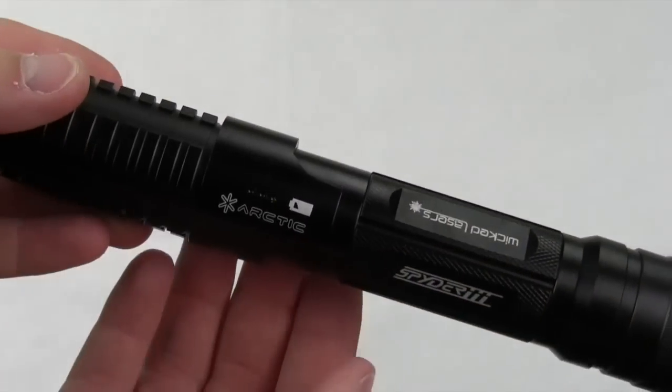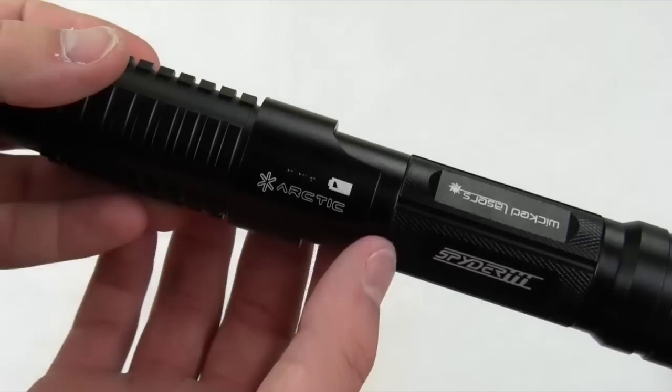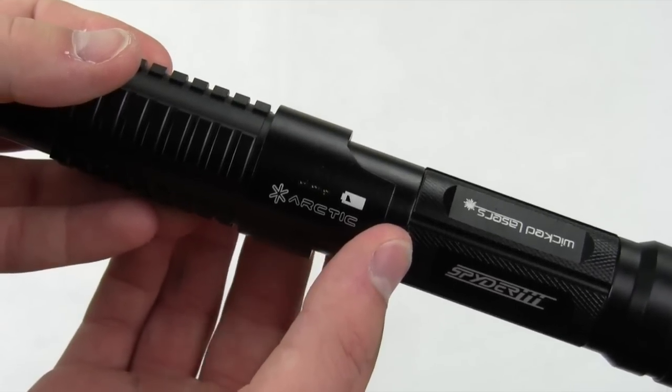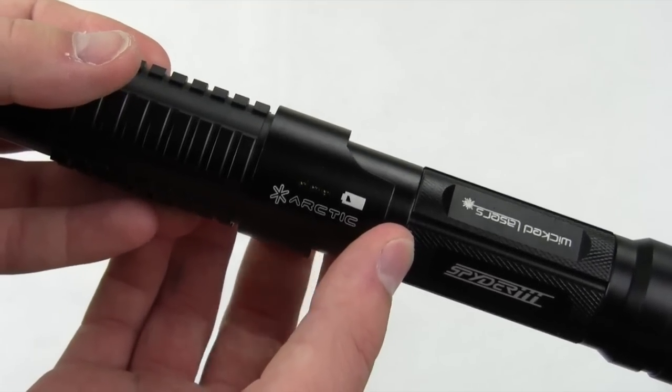As you can see, there is the power indicator right there. There's also an LED on the other side. It kind of helps you figure out the key combination. You press three times, one two three, then you need to hold it, and then hold it again, and this will turn on the laser.